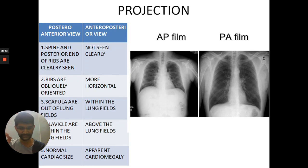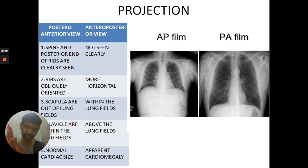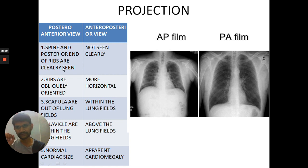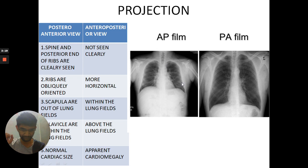Third is projection. Projection means whether the photons are passed from posterior to anterior or from anterior to posterior. Sometimes we also get lateral films. PA view and AP view are the most common. In PA view, the spine and the posterior ends of the ribs are clearly visible, as you can see here, and they are not so in the AP film.